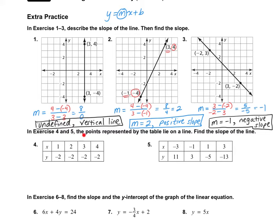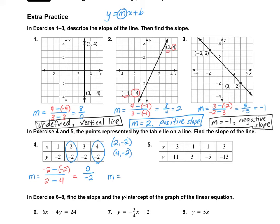In exercises 4 and 5, the points in the table lie on a line and we need to find the slope. We're given more information than we need, so just choose any two points. I'll use 2 comma negative 2 and 4 comma negative 2. Plugging in: negative 2 minus negative 2 is 0 on top, and 2 minus 4 is negative 2. Anytime you have 0 on the top the answer is 0, so the slope equals 0.